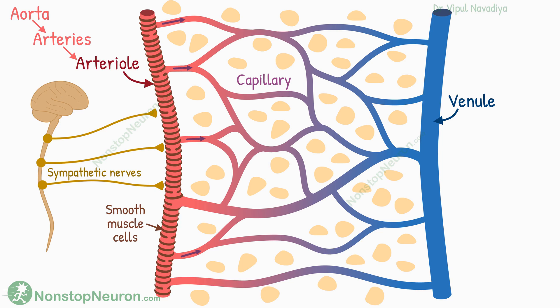The capillaries originate from the arterioles. Right at its origin point, each capillary has a cuff of smooth muscle encircling the opening. It's called the precapillary sphincter. It controls the entry of blood into the capillary, and it does not receive innervation.